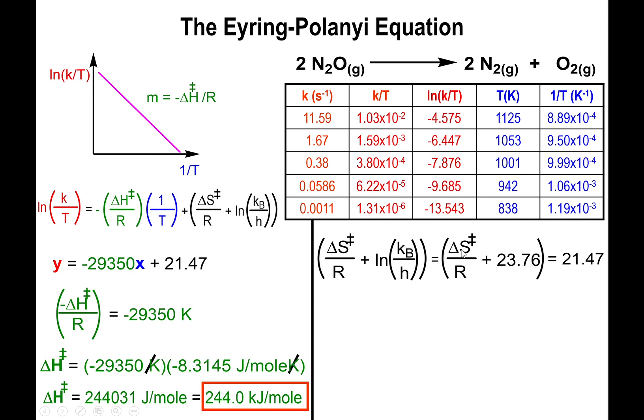In future problems I'm just going to provide you with a number. The number itself is 23.76. So delta S at the transition state over R plus 23.76 is going to equal 21.47 as told by the equation of the line.